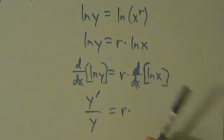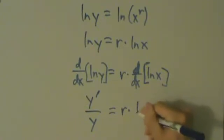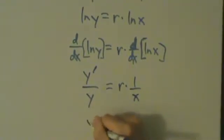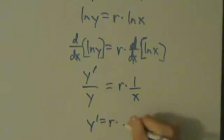So d/dx of ln x is 1 over x. So we have r times 1 over x. So this means that y' equals r times, so we multiply both sides by y, and then what we get is y over x.